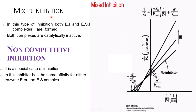Mixed inhibition: in this type, both the enzyme-inhibitor complex and enzyme-substrate-inhibitor complex are formed, and both complexes are catalytically inactive. The inverse plot shows an intersection point, and the formula is: 1/V₀ = (α·Km/Vmax)·(1/[S]) + α'/Vmax.